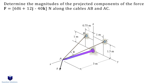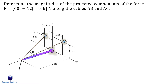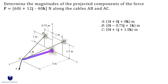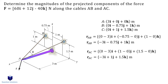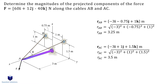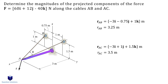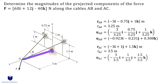Let's take a look at this question involving projections. We need to figure out the magnitudes of the projected components of the force along cables AB and AC. When we have questions asking for projections, we need to find unit vectors. So in this problem, we need a unit vector for cable AB and cable AC. Let's start by writing down the locations of each point — A, B, and C. Next, we need a position vector from A to B and A to C. Now we can find the magnitude. Finally, we can divide each component in our position vector by the magnitude, and we get our unit vectors.